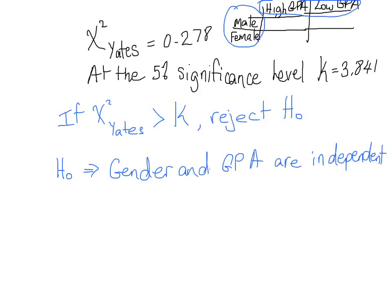So our chi-squared Yates, if it's bigger than our K, we would reject the null hypothesis. But what I just wrote down is absolute nonsense. It is not bigger than our K.